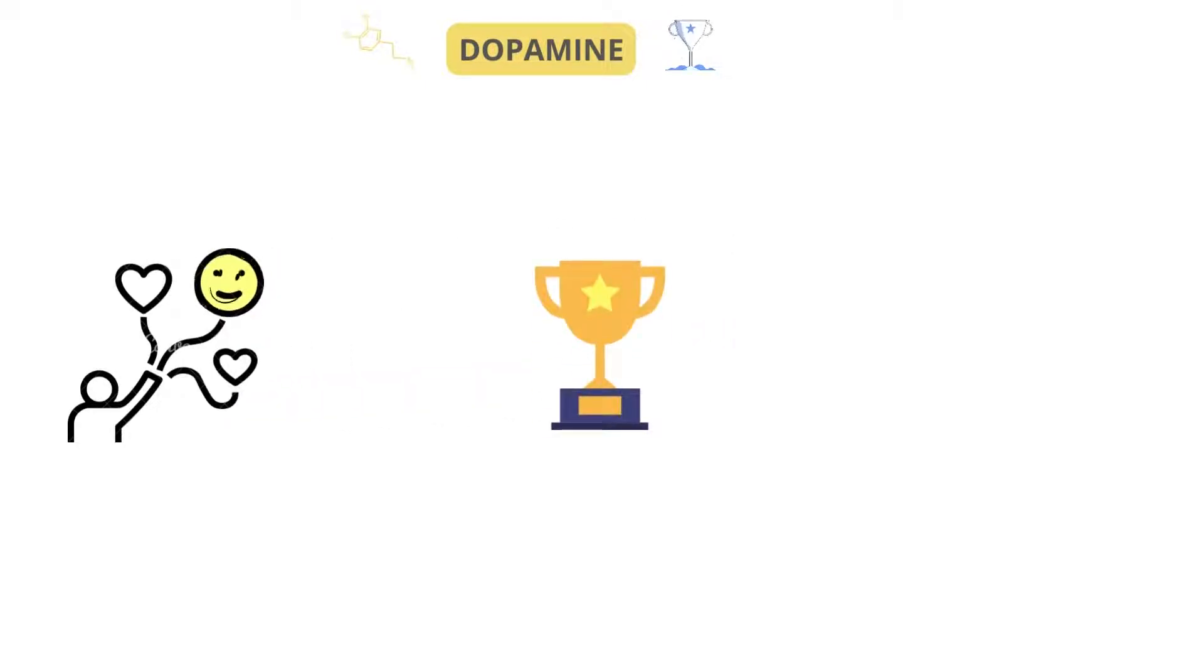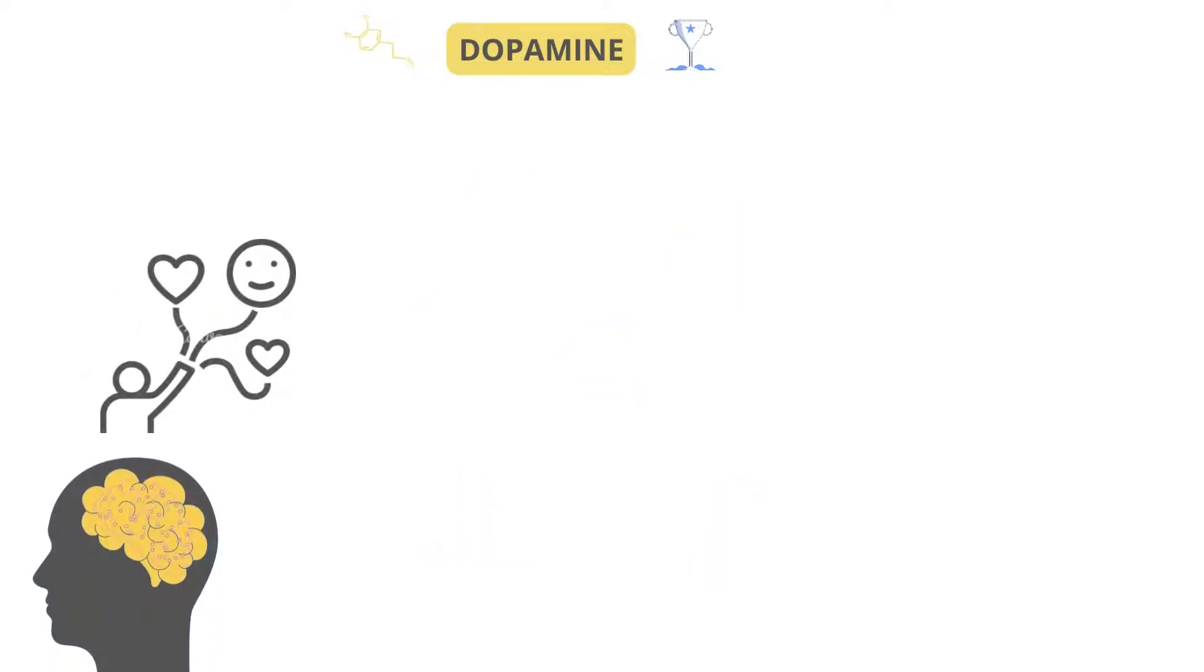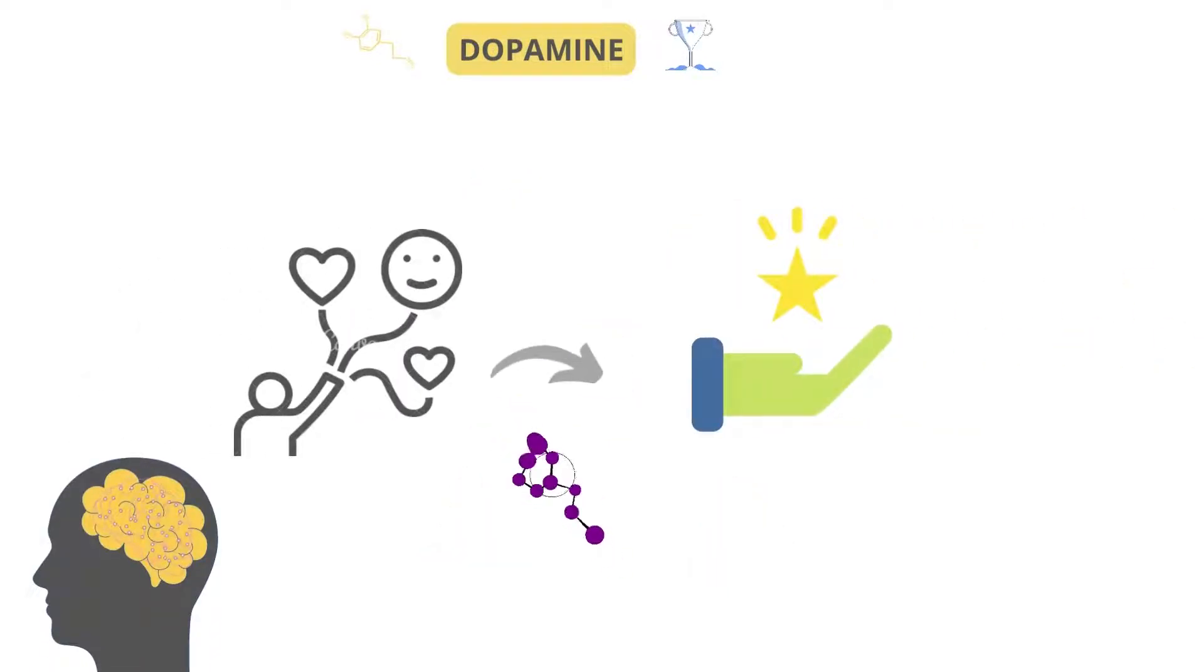This system is designed, from an evolutionary standpoint, to reward you when you're doing the things you need to do to survive: eat, drink, compete to survive, and reproduce. As humans, our brains are hardwired to seek out behaviors that release dopamine in our reward system.